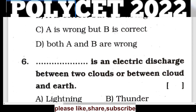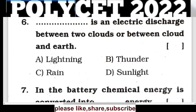Question 6: A dash is an electric discharge between two clouds, or between clouds and the earth. Clouds rubbing causes friction, producing electric charge which then discharges. This is called lightning. Option A is the correct answer.